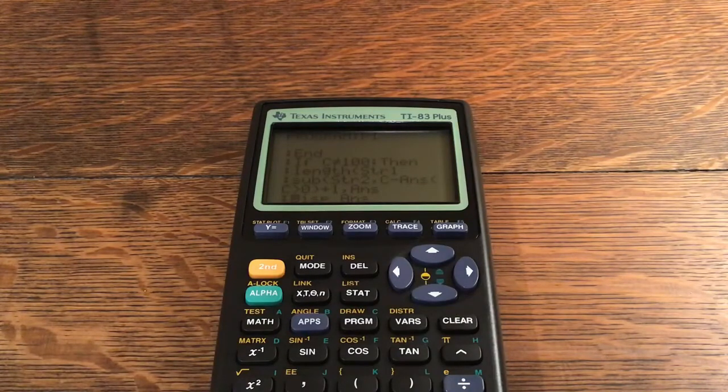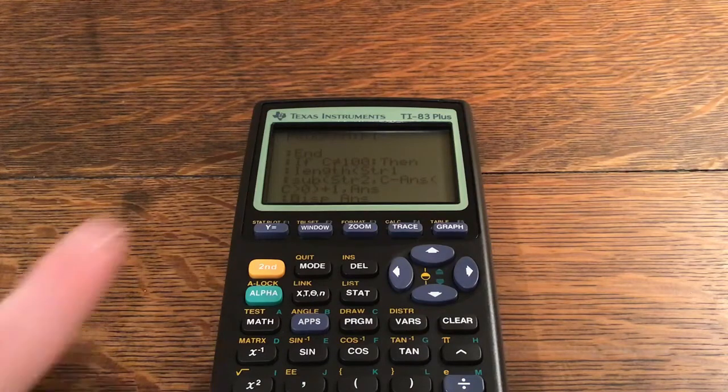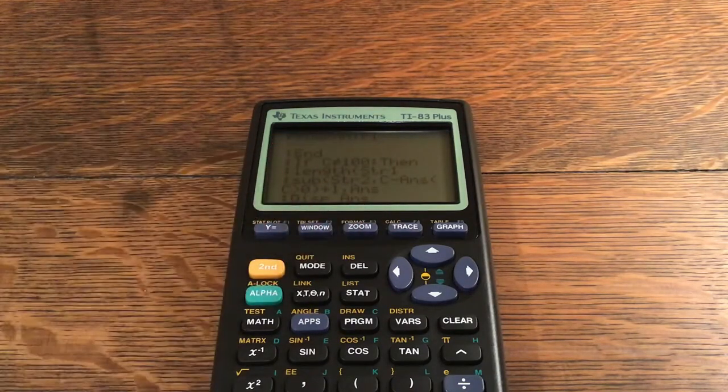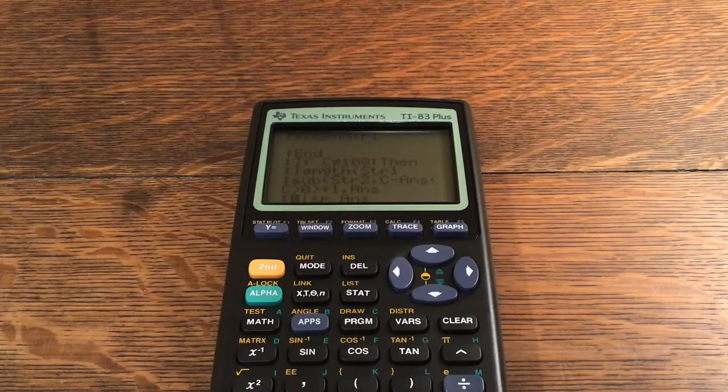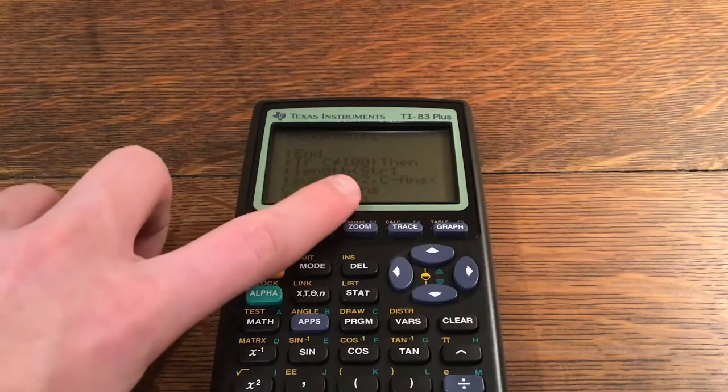Then I have if c is not equal to 100, then length of string one, sub string two comma c minus answer multiplied by c is greater than zero plus one comma answer. So I'm only subtracting answer if c is greater than zero. So if you didn't fail on the first one, if you put in 3.15, it'll still give you that 3.14, because otherwise it's going to start at the zero spot of string one or string two I mean, and so you don't want that to happen.